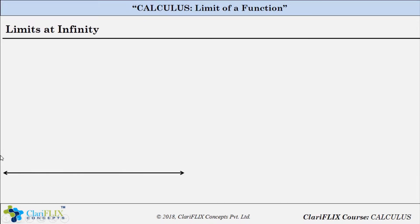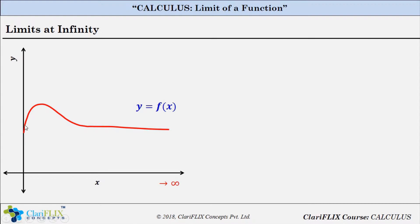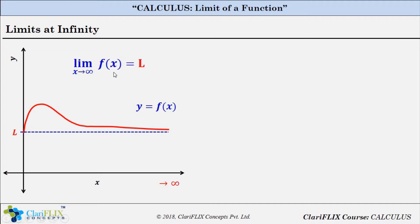Say y equals f of x is a function where x is the independent variable and y is the dependent variable. The function is represented on an xy grid using the red line. As and when x is approaching infinity, the value of y is approaching some specific value, capital L. This means that as you feed very large values of x to this function, the value of y keeps approaching capital L. Mathematically this is written as: limit of f(x) as x tends to infinity equals L.